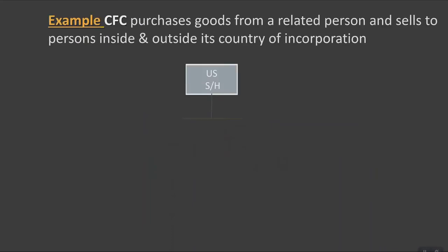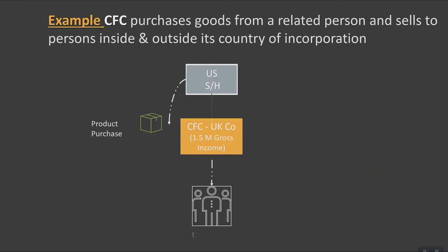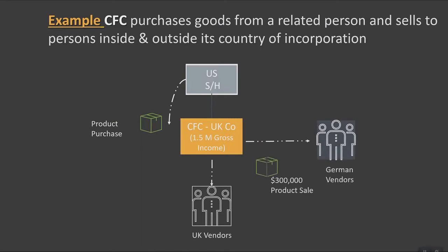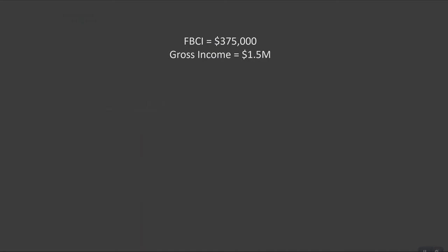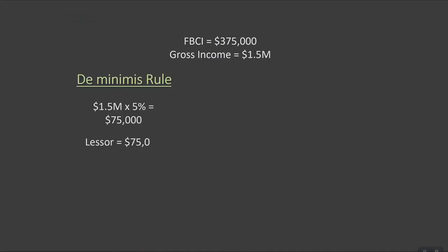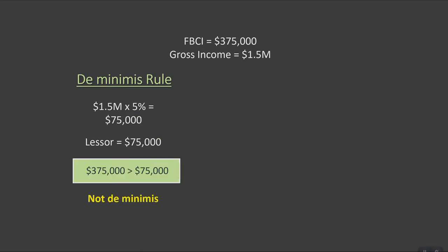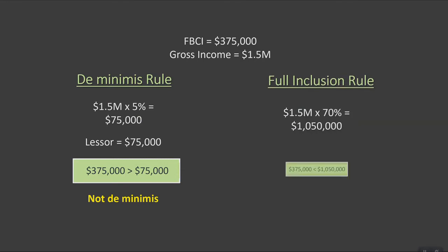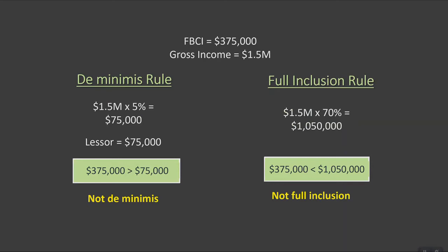Let's assume a foreign company has $1.5 million of gross income. The company purchases goods from a related party and sells mainly to customers in its own country. However, out of the $1.5 million, $300,000 of income relates to sales to a customer in another country, and $75,000 relates to interest income. The company determines that the $300,000 is foreign-based company sales income and the $75,000 is passive. Their subpart F does not meet any exceptions and does not meet the de minimis test, because $1.5 million times 5% is $75,000, and our $375,000 is more. For the full inclusion rule, 70% times $1.5 million is $1,050,000, so our $375,000 is less than that and we are limited to including just the $375,000.